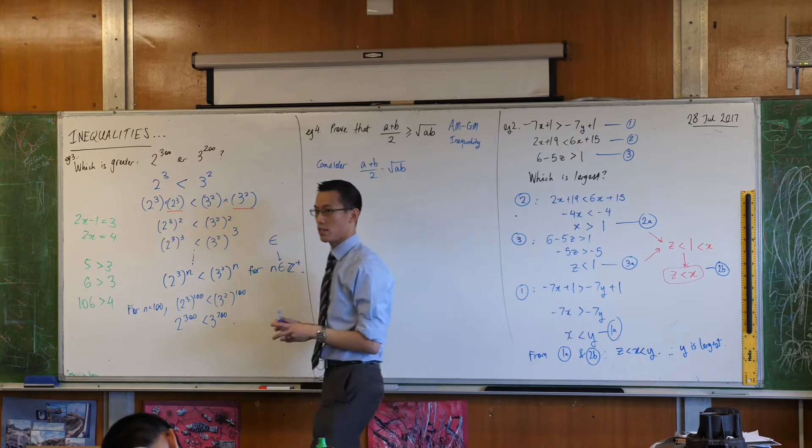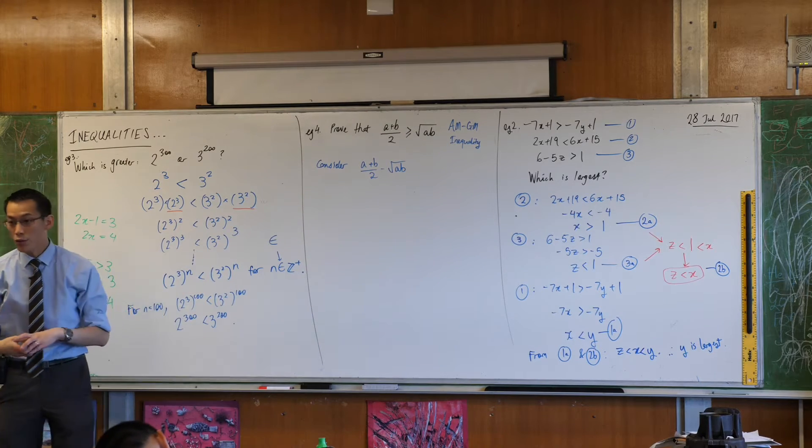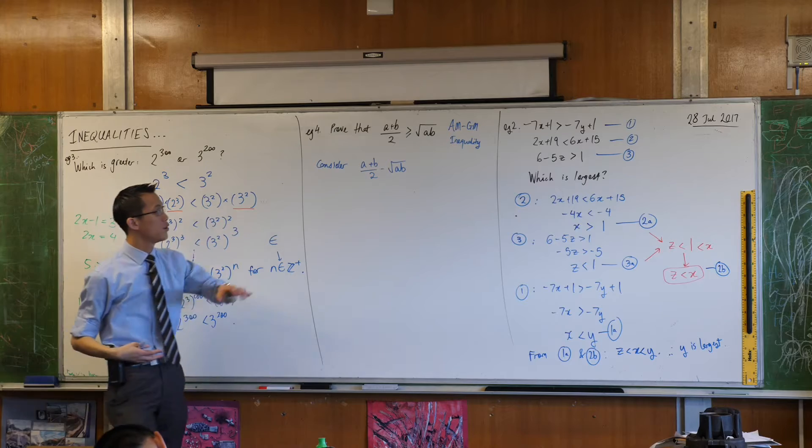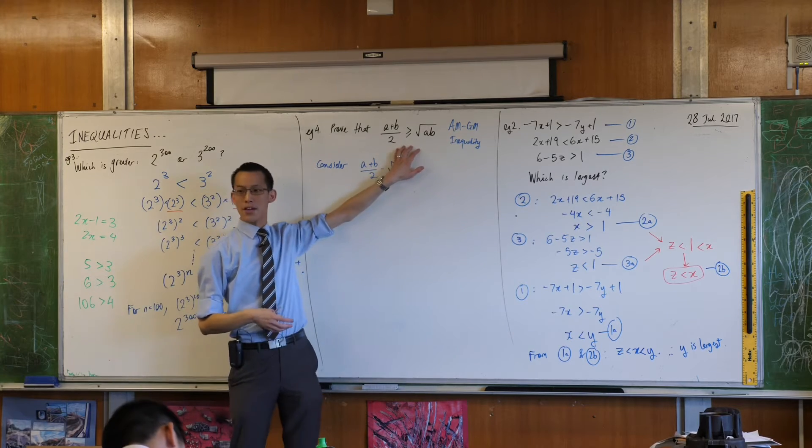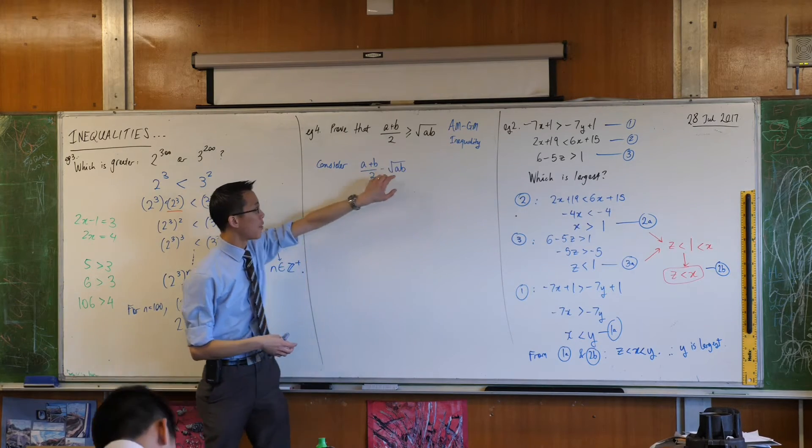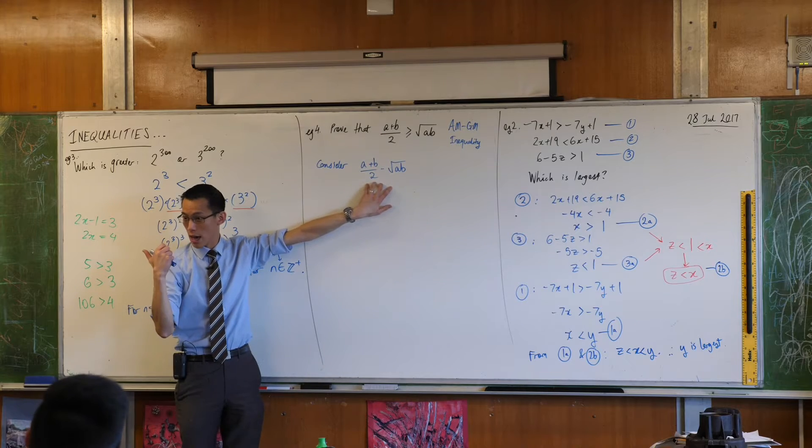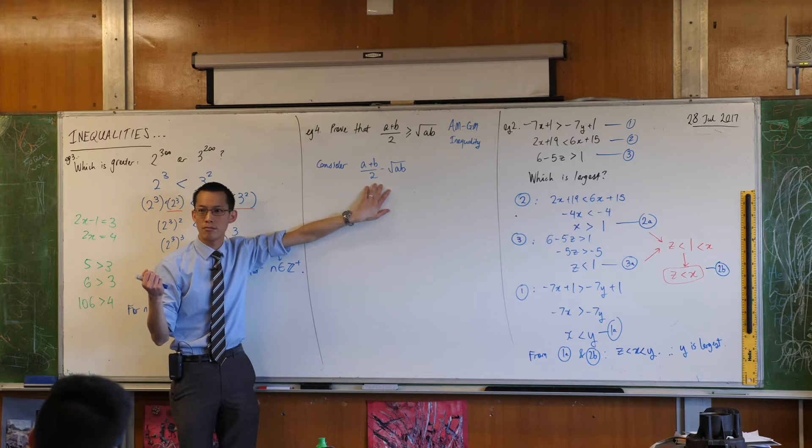Here's what we're going to do. You guys made this suggestion to me for the very first question today. I'm going to move everything onto one side, so you can see if I subtracted the square root of ab from both sides, then this is what I would get on the left hand side. What will be left on the right hand side? Zero.